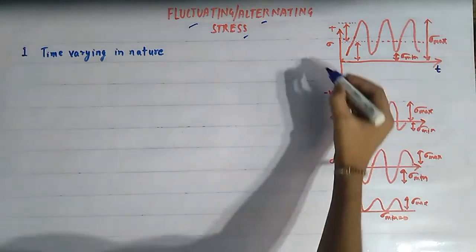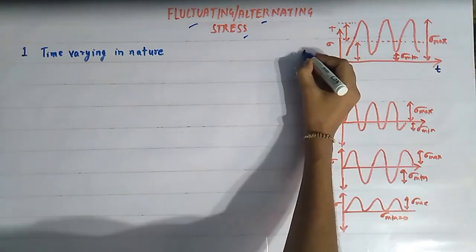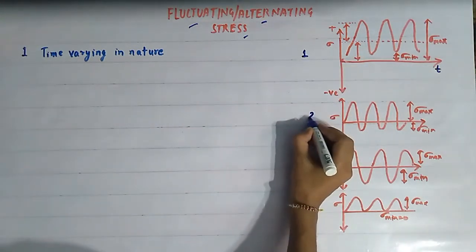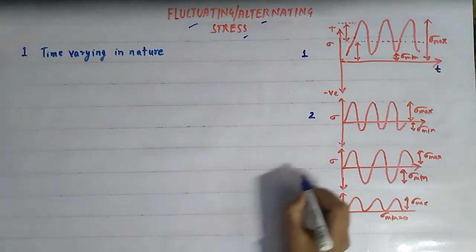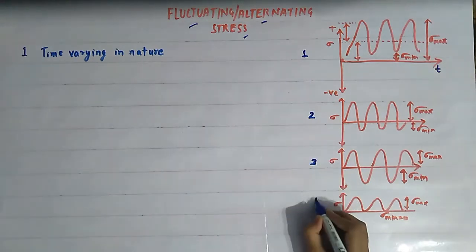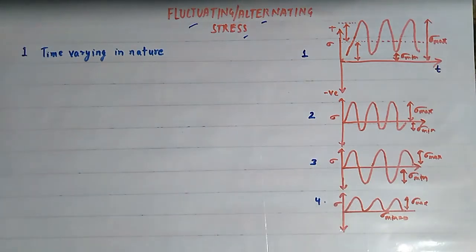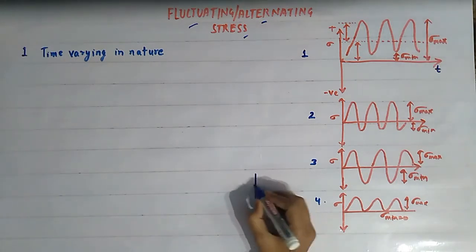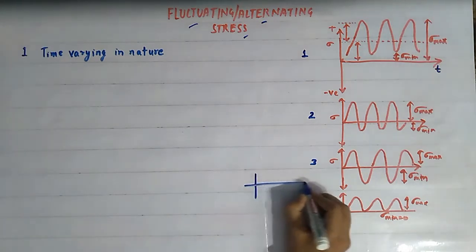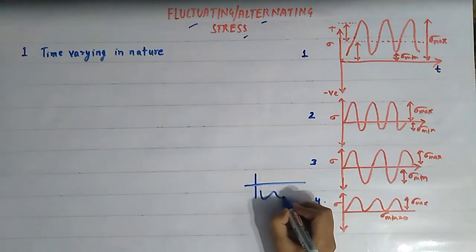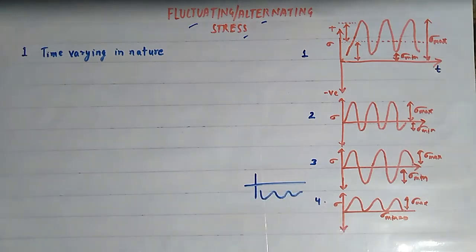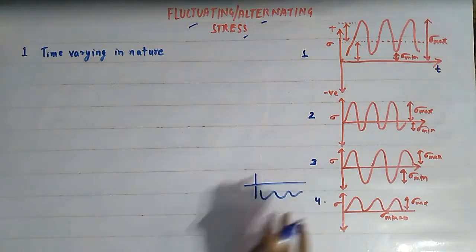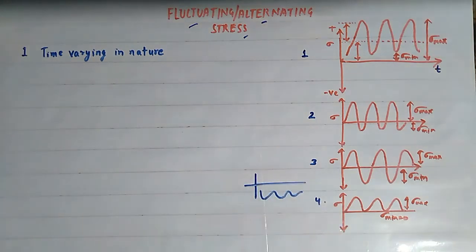This is case number one of fluctuating stresses, this is case number two, this is case number three, and this is case number four. There can be more cases of fluctuating stresses, such as stresses which are purely compressive in nature — these also come under the category of fluctuating stresses.